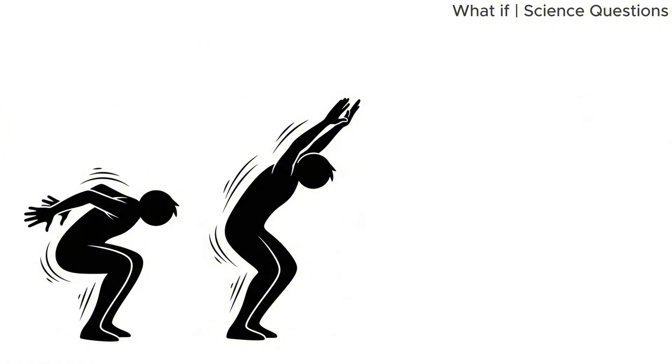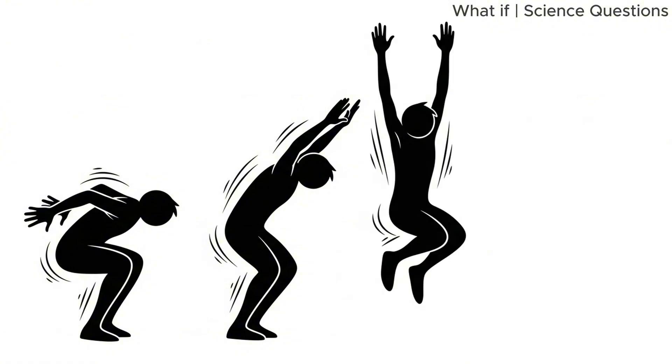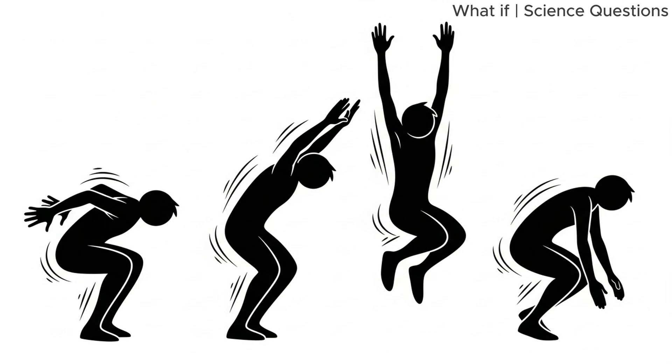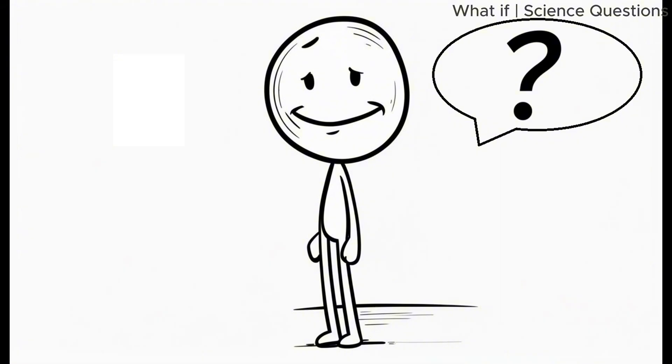We'll also assume that everyone jumps vertically and with maximum effort. No weak little hops. This is a full commitment, knees bent, arms swinging, pushing off the ground like your life depends on it. So, what happens?